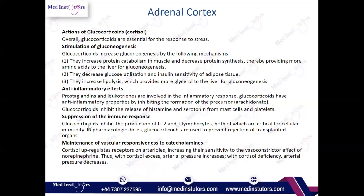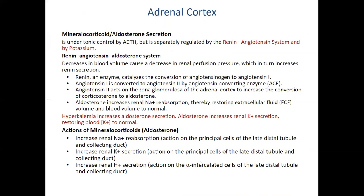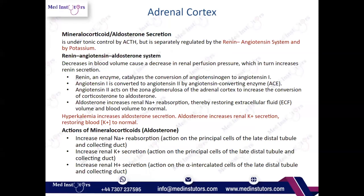Cortisol also suppresses the immune response — we use corticosteroids in autoimmune conditions to suppress the immune system. Another function is maintenance of vascular responsiveness to catecholamines: it upregulates receptors on arterioles and increases sensitivity to the vasoconstrictive effect of norepinephrine. Thus, with excess cortisol, blood pressure may be high.